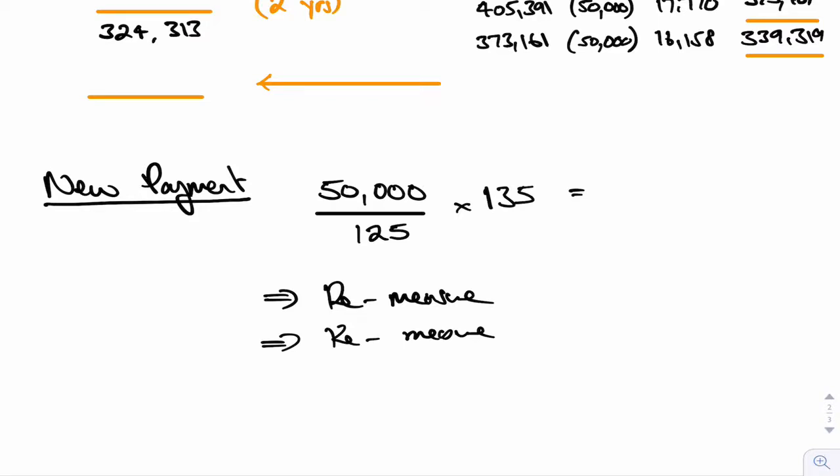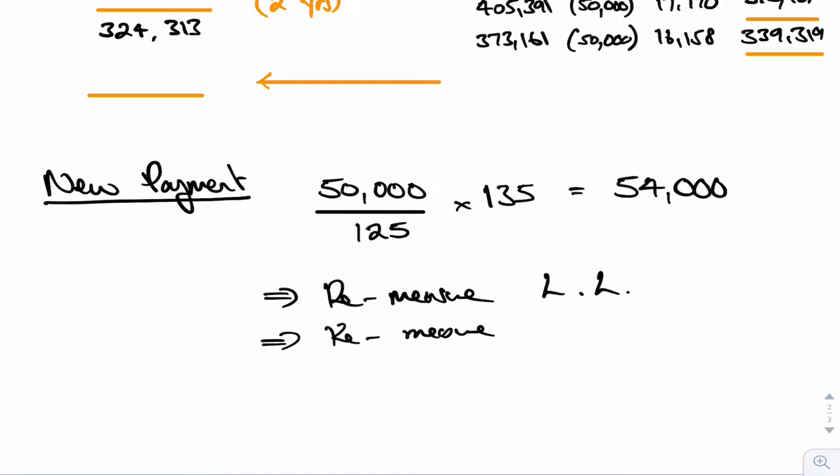So therefore the new payments we're going to have to pay in the future is 54,000. So we're going to have to re-measure the lease liability, aren't we? Because it's no longer 50,000 a year, it's 54,000.